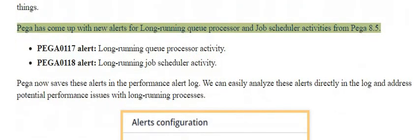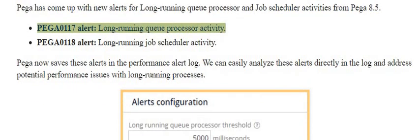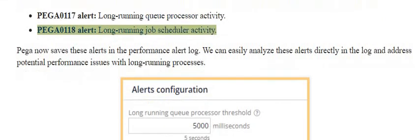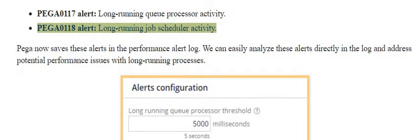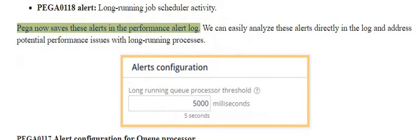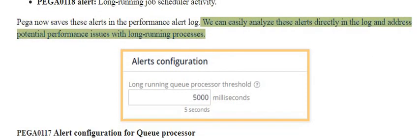Pega has come up with new alerts for long running queue processor and job scheduler activities from Pega 8.5. PEGA0117 alert: long running queue processor activity. PEGA0118 alert: long running job scheduler activity. Pega now saves these alerts in the performance alert log, so we can easily analyze them directly in the log and address potential performance issues with long running processes.